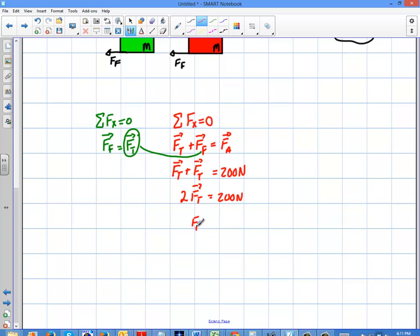So the force of tension in this case is going to be 100 newtons. You just divide the two over, or exactly one half of the applied force.